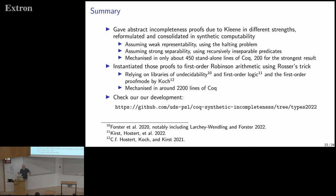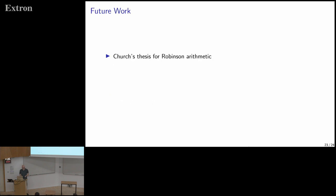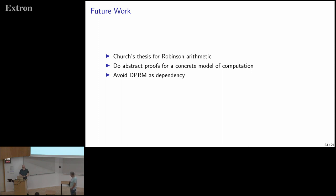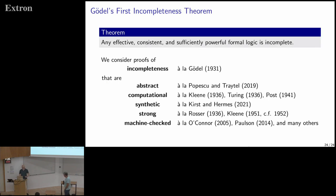We've machine-checked all results. The strongest form of the abstract incompleteness results can be written in only about 200 lines of Coq code. The total development, including dependencies, consists of roughly 160,000 lines of code. For future work, we're interested in finding a form of Church's thesis for Robinson arithmetic as a model of computation, doing abstract proofs for concrete computation models, avoiding DPRM as a dependency, and proving Gödel's second incompleteness theorem.